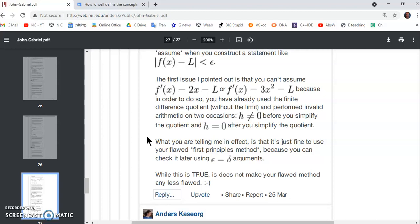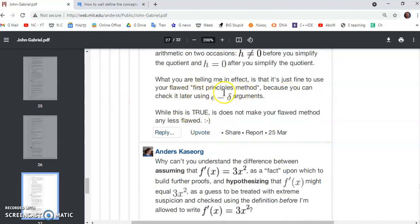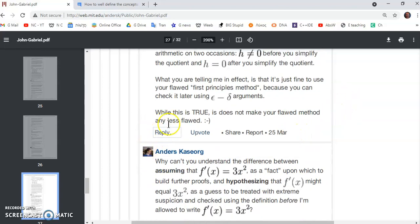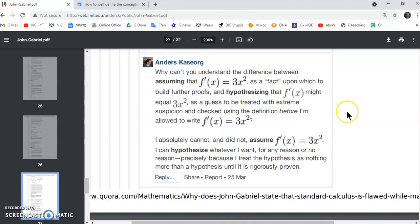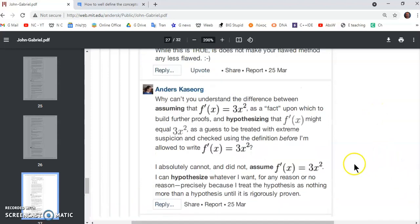The first principle method means the epsilon delta definition, this definition down here. So you cannot assume that the derivative is 2x, which is equal to L, because in order to do so, you already used the finite difference quotient without the limit and performed invalid arithmetic on several occasions. But you're telling me, in effect, that it's fine because your flawed first principle method allows you to check it later using epsilon delta arguments.